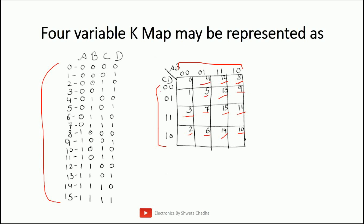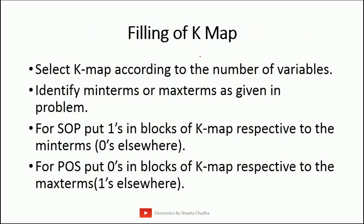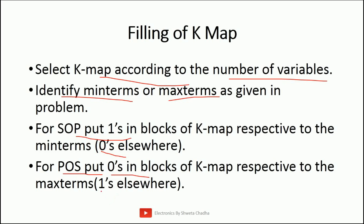The first step is always to identify which K-map you are going to design, based on how many variables are given in the expression. To fill the K-map: first select the K-map according to the number of variables, then identify the min terms or max terms. Min terms represent SOP and are filled as 1; max terms represent POS and are filled as 0. For SOP, put 1 in all specified blocks and 0 elsewhere. For POS, fill 0 in the specified blocks and 1 elsewhere.